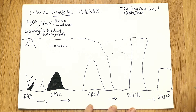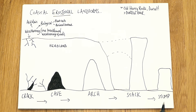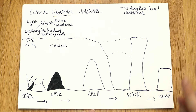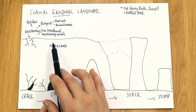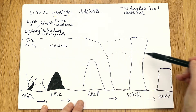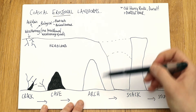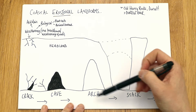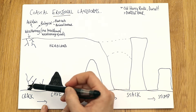So the exact sequence is: crack, cave, arch, stack, stump. The two things really responsible for this — other than weathering, which affects aerial or sub-aerial processes above the sea — are two types of erosion happening down at the water, and they're really important to mention.